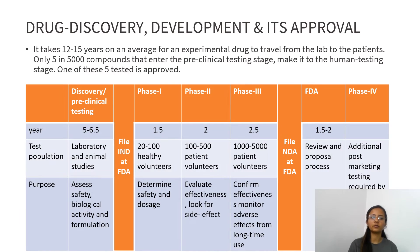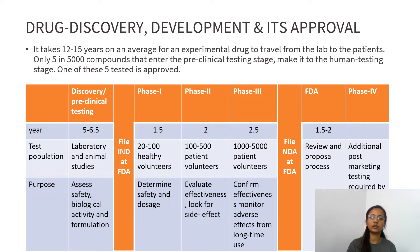The drug development process begins with discovery or preclinical testing, followed by Phase 1, Phase 2, Phase 3, FDA approval, and then Phase 4. Preclinical testing takes 5 to 6.5 years. The test population consists of laboratory and animal studies. The purpose is to assess safety, biological activity, and formulation.